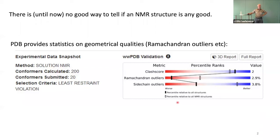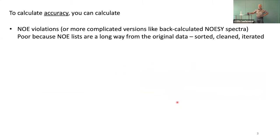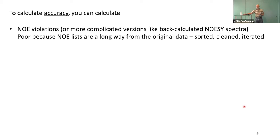So how do you tell if it's correct? If you want to tell if your structure is correct, you have to compare your structure to the input data. The obvious input data is NOEs — you look at NOE violations. But NOE violations are really not a good way to tell if your structure is correct, because the NOE list used to generate your structure is derived from NOE spectra through a long iterative process — you delete NOEs you don't like, work out distance relationships. The NOE list is quite a long way from the input data, so it's not really a good test.